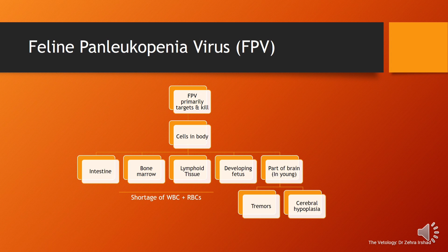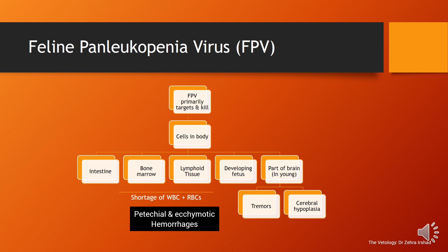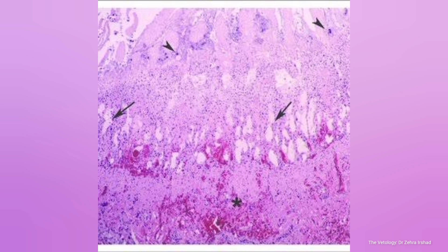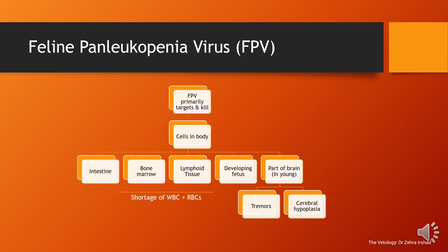This information is important for identifying lesions of the disease. On post-mortem, intestinal dilation and hyperemia can be seen, as well as petechial and necrotic hemorrhages. On histopathology and histological slides, changes in morphometry such as villus height and crypt depth are easily observed.